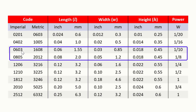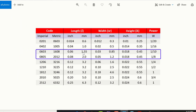You can find the capacitor sizes from any internet source. For example, the length and width of an 0805 package is 2 mm by 1.2 mm.